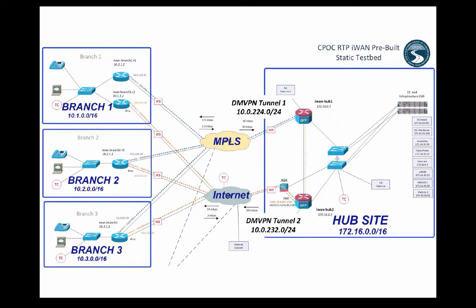We're going to focus on branch one and branch three. If you look at branch one's phone, I have a DHCP binding with IP address 10.1.101.104. The phone over in branch three has 10.3.101.101. We actually have a voice and video phone call going on between those two Cisco phones.